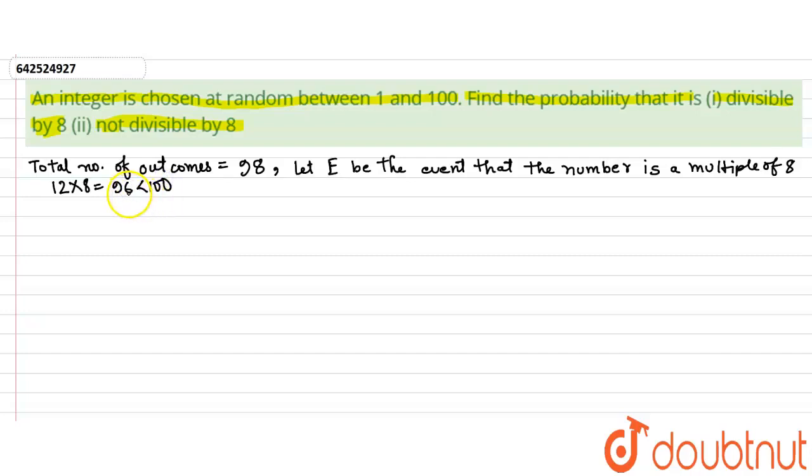And if we just add 8 to 96, we would get 104. So 12 times 9 is 104, that is greater than 100. So there are 12 multiples of 8 less than 100.